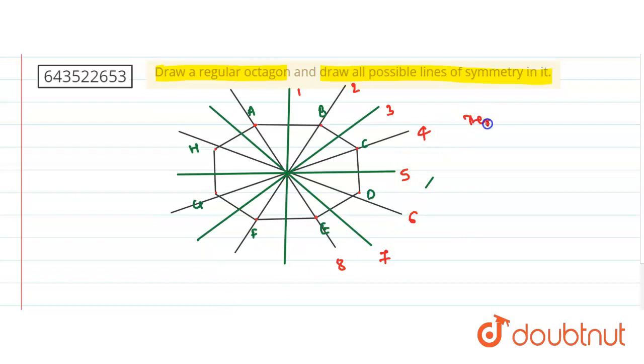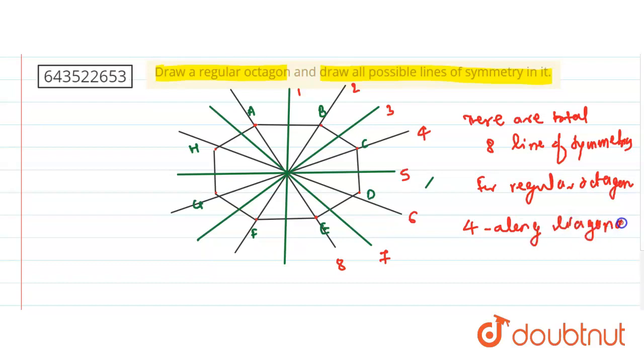There are total eight lines of symmetries for regular octagon, 4 along diagonals, and 4 along sides. So that's it, hope you have got this.